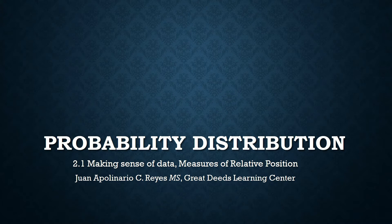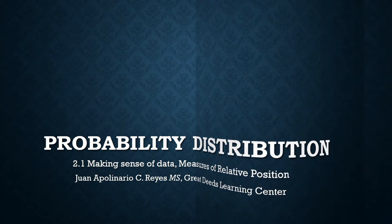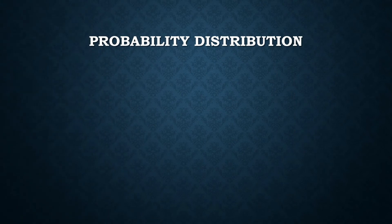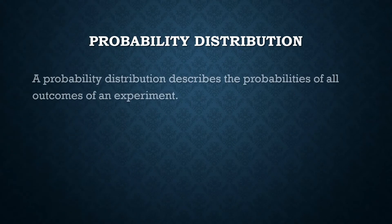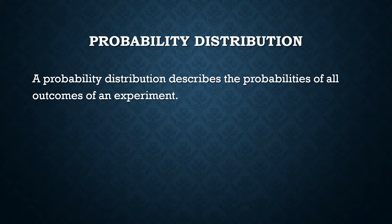Probability distribution was introduced to you way back in grade 9. You had it in grade 8, 9, and 10, and you have a part there for probability distribution. So what is a probability distribution? A probability distribution describes the probabilities of all outcomes of an experiment. So let's make a concrete example.